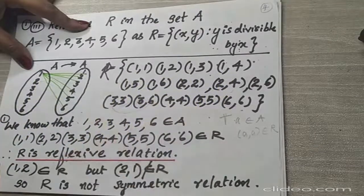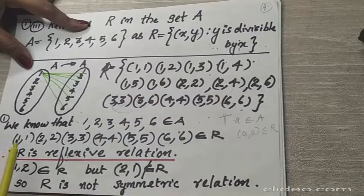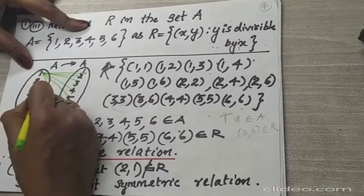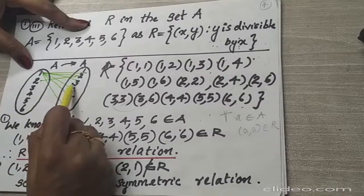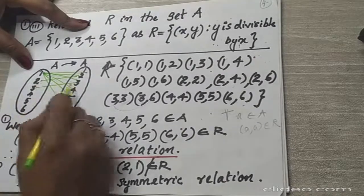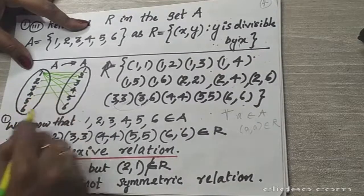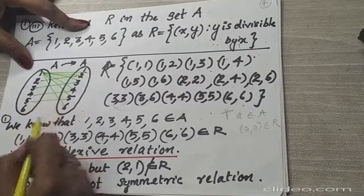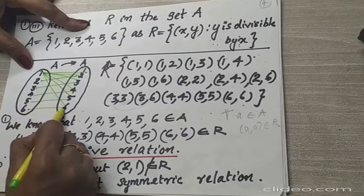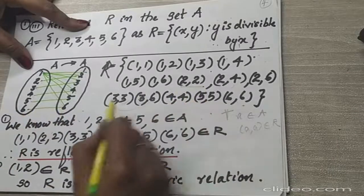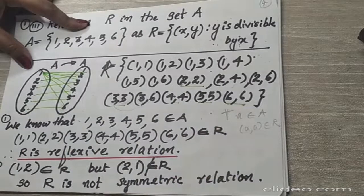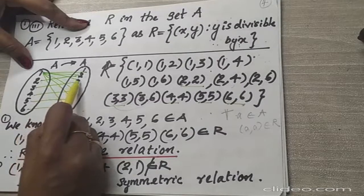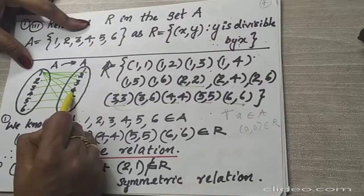Now, 2 is divisible by 2 as well, so (2,2) is in the relation. Also, 3 is divisible by 3, 4 is divisible by 4, 5 is divisible by 5, and 6 is divisible by 6. So pairs (2,2), (3,3), (4,4), (5,5), (6,6) are also in the relation.